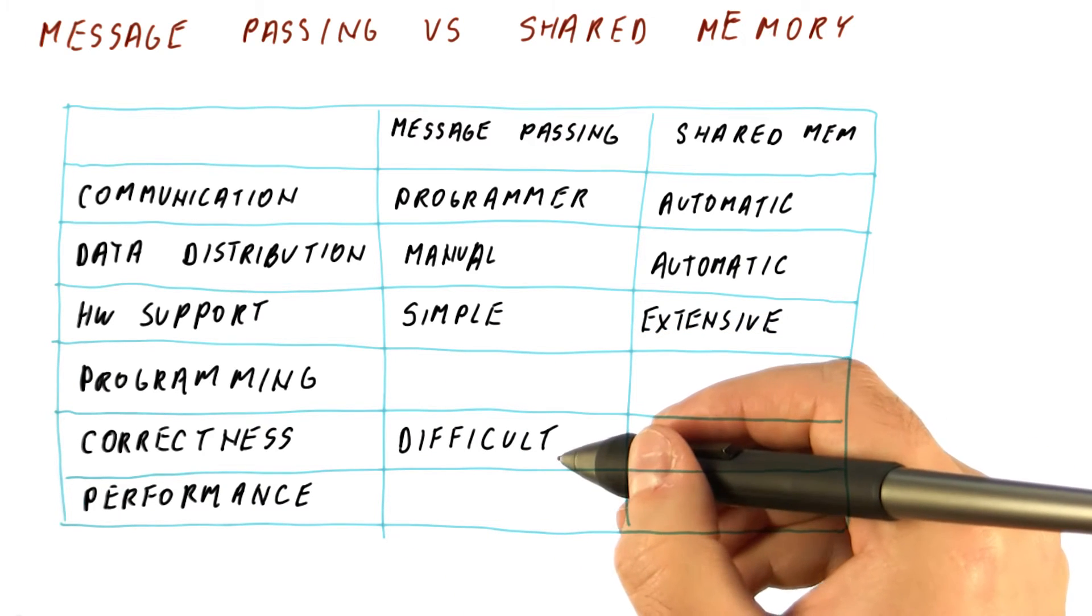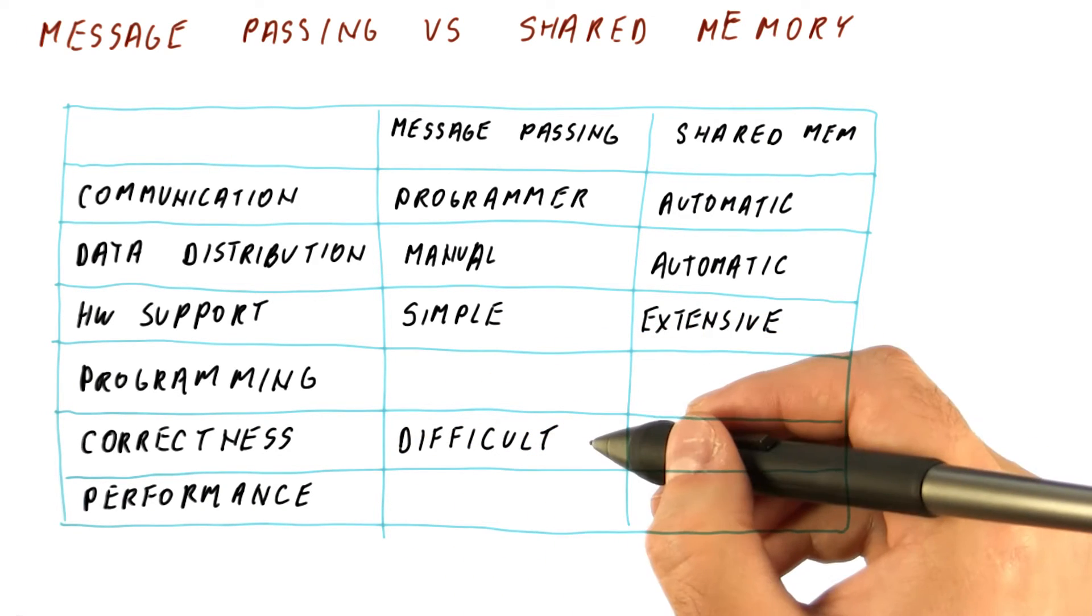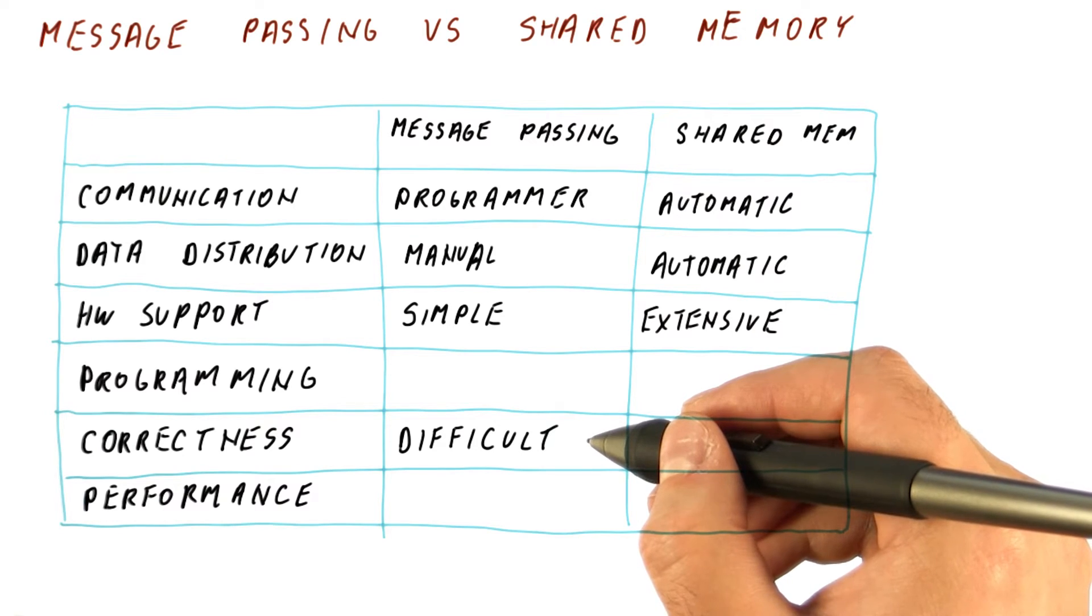In message passing, getting correctness is difficult because you have to orchestrate everything perfectly and you can get all sorts of deadlock issues and wrong distribution.